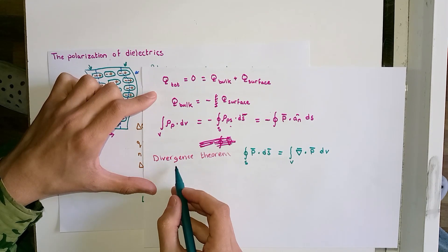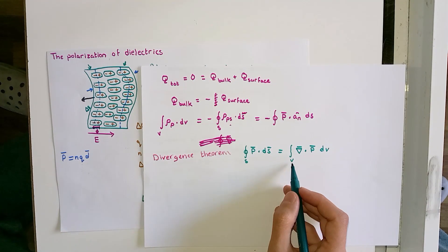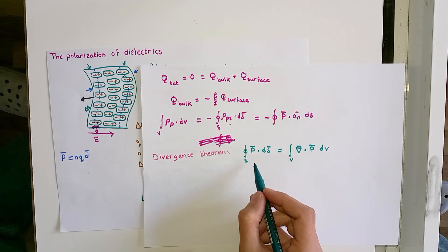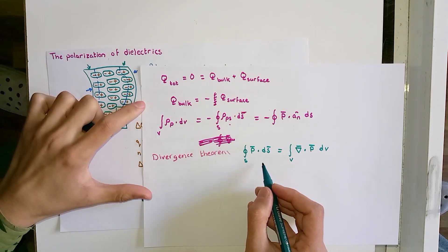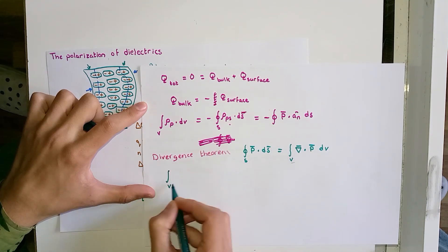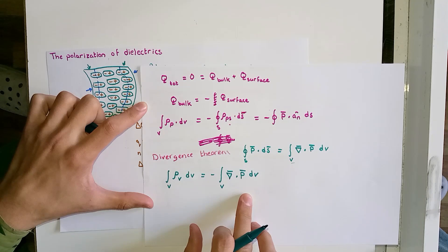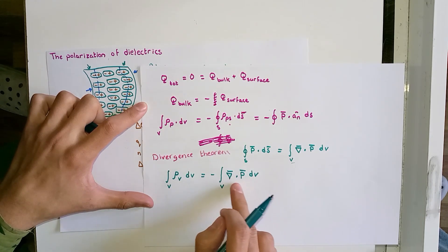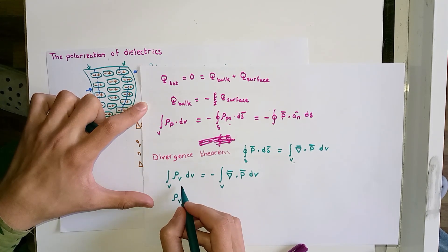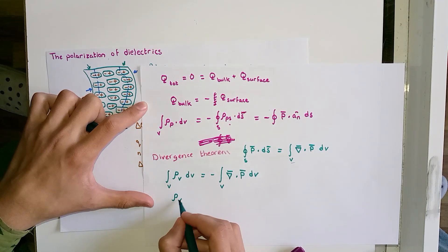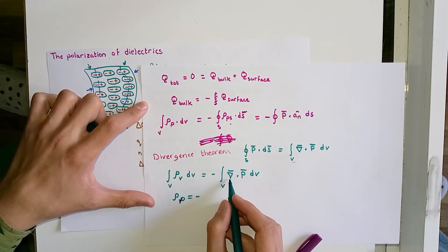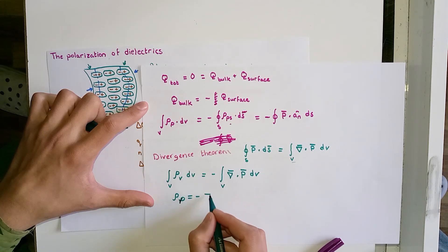I am now going to use the divergence theorem, which states that the volume integral of the divergence of a vector quantity equals the surface integral of that vector quantity. Substituting this, and from the equality of the integrands, we can deduce that the volume charge density rho_v is equal to the negative divergence of the polarization vector P.